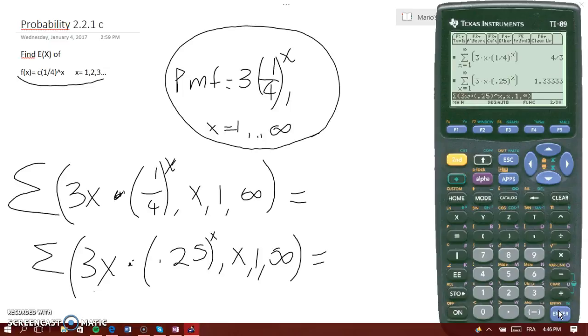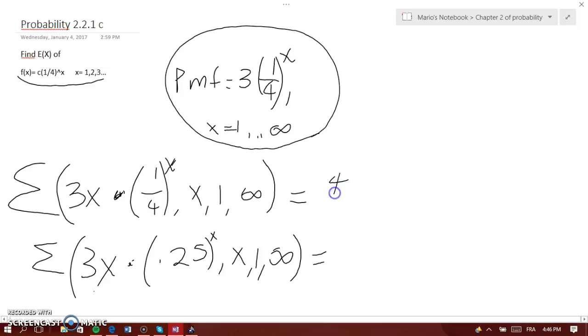So, there are two ways you can write it. The first answer would be four-thirds, which would be in the second form as decimal 1.33. So, this here is the expected value of this PMF.